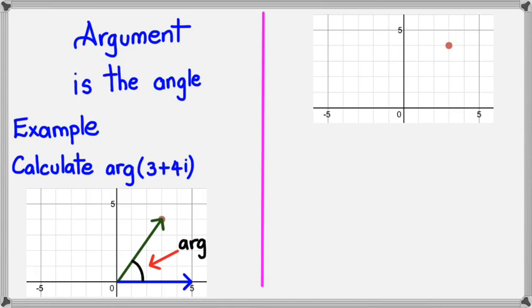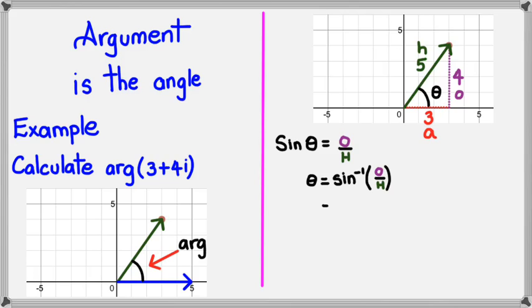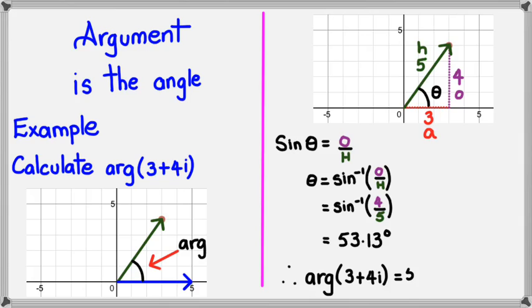So if I want to work out the angle of 3 plus 4i, the complex number, then I've got 3 on the x-axis, 4 on the y-axis. I know that the modulus is 5 from the previous example. I'm trying to figure out that angle there, which is theta. So if I want to figure out theta, one good recommendation is use either sine or cosine. And I'll get to tan later on why it's a bit of a hassle using tan. I'm going to use the sine rule in this case. I've got opposite over hypotenuse. So theta is inverse sine of opposite over hypotenuse, and just working it out, I get 53.13 degrees. Which means the argument for 3 plus 4i is equal to 53.13 degrees.